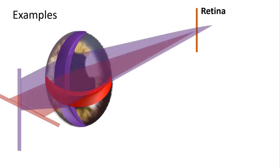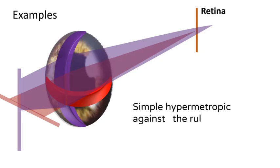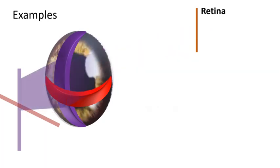Here: one meridian focuses on the retina, so it is simple. The other meridian focuses behind the retina, so hypermetropic. Step three, the horizontal meridian is more myopic, so it is against the rule. This is a simple hypermetropic against-the-rule astigmatism.